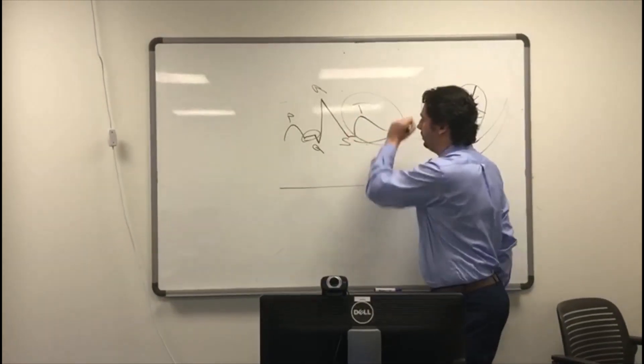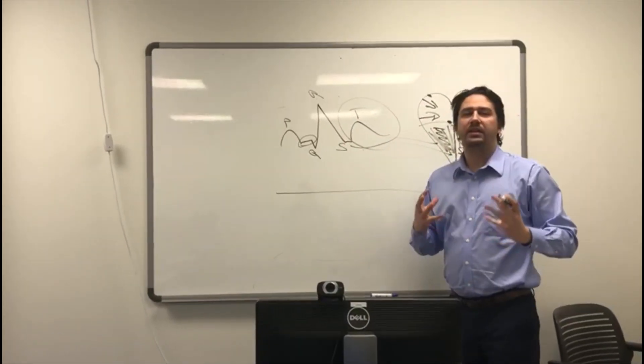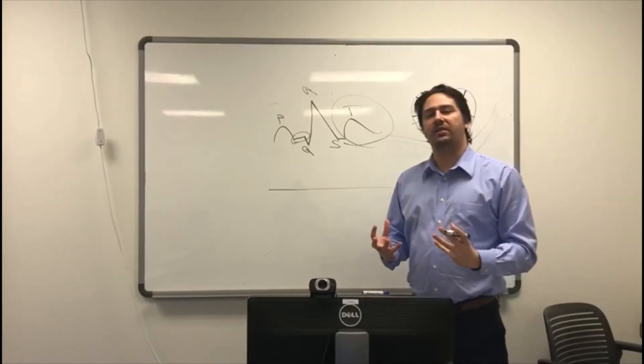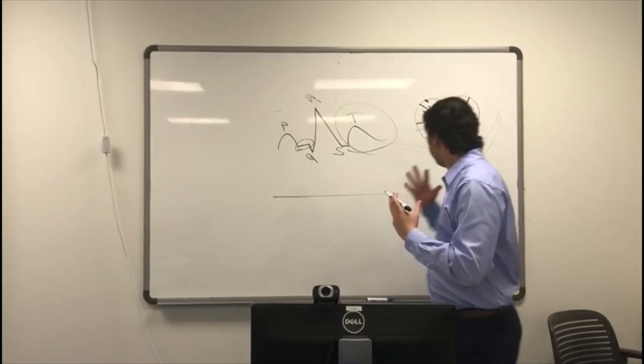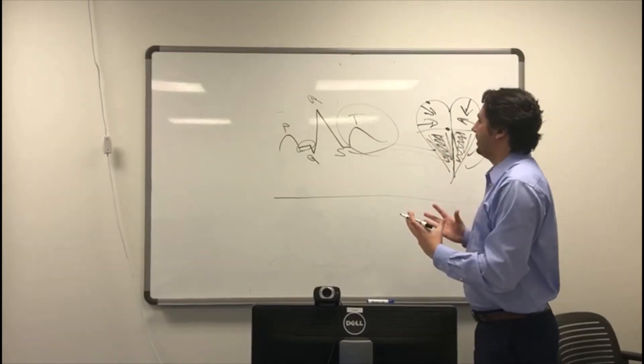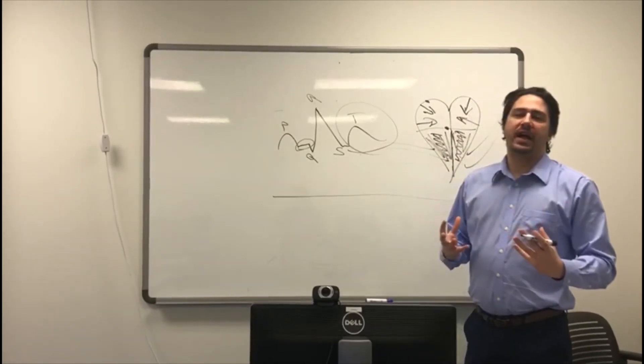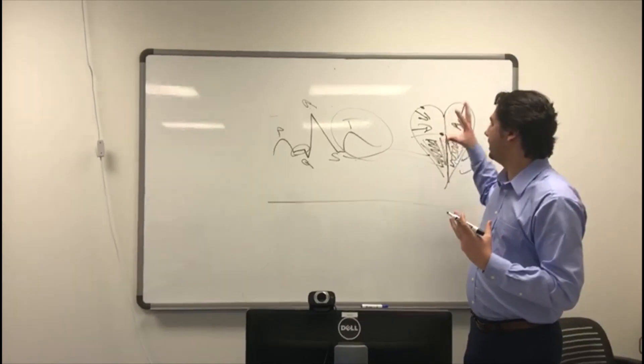The T wave. Your T wave is ventricular repolarization, ventricular relaxation. They're relaxing. As they're relaxing, the atrium again are getting shocked.